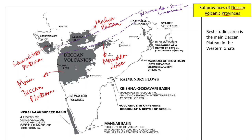To study the Deccan Traps, the best location is the main Deccan Plateau exposed in the Western Ghats. This area lies in western Maharashtra, known as the Sahyadri group. If a question is asked about the Deccan Volcanic Province, draw the peninsular part of India and mark these four locations.